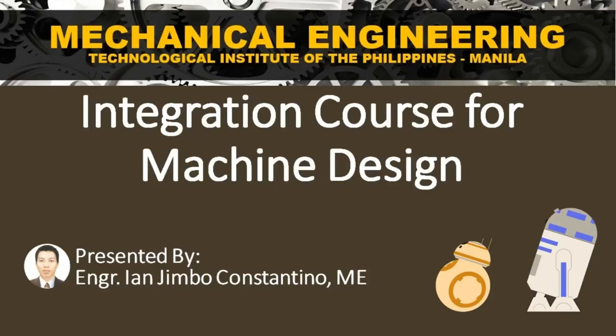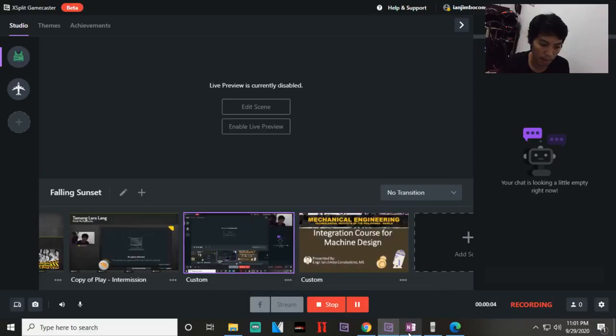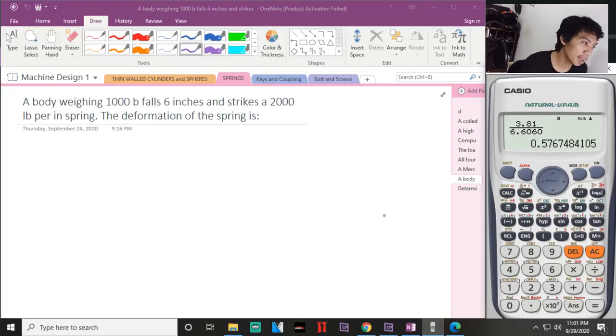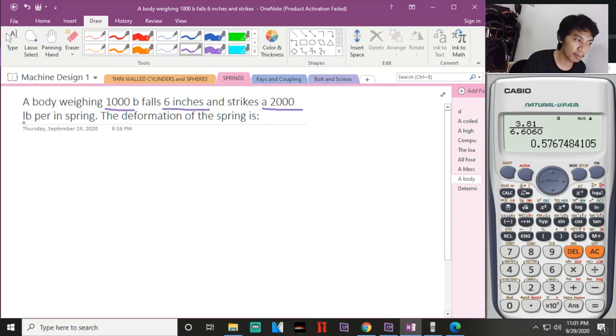For the last two problems, let's go with this question. A body weighing 1000 pounds falls six inches and strikes a 2000 pound per inch spring. So this is k. The height of the fall is six inches.